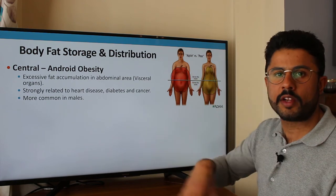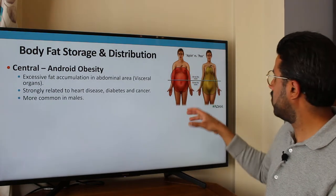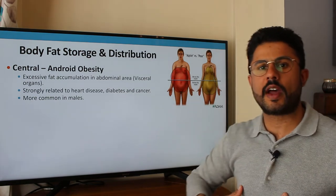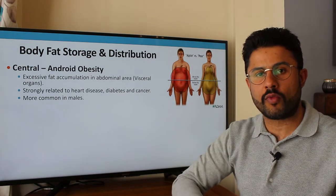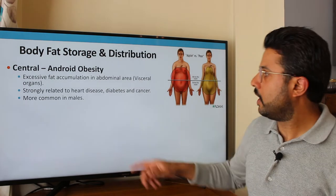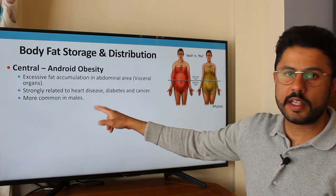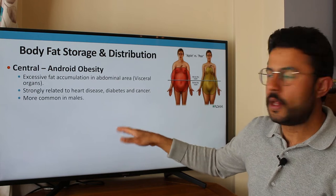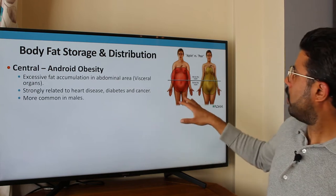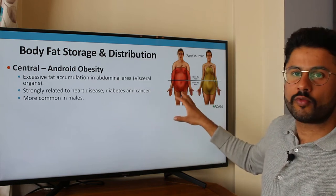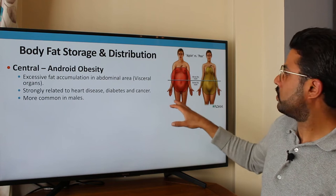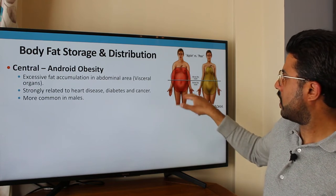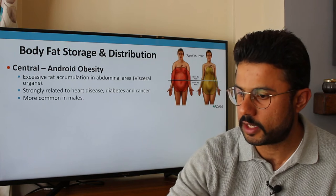This causes direct damage and damage elsewhere in the body. If you have central android obesity — a lot of your fat deposited around your belly — you're going to have a greater risk of heart disease, type 2 diabetes, and cancer as well. It's more common in males; males generally tend to have more of this central android obesity.